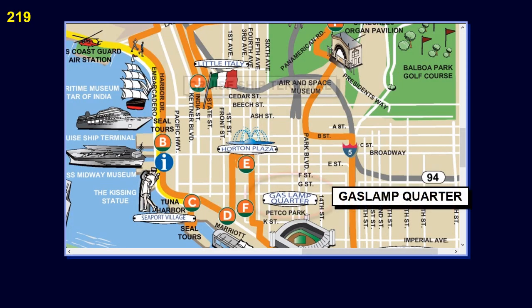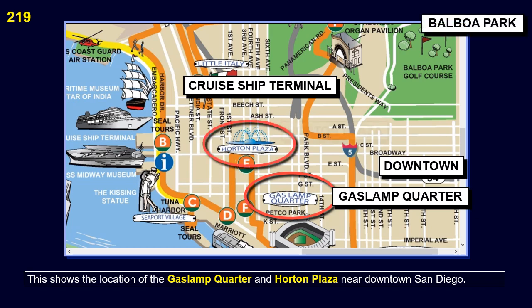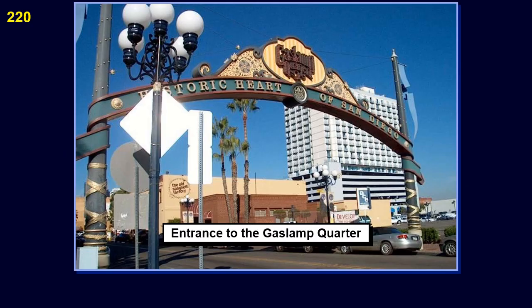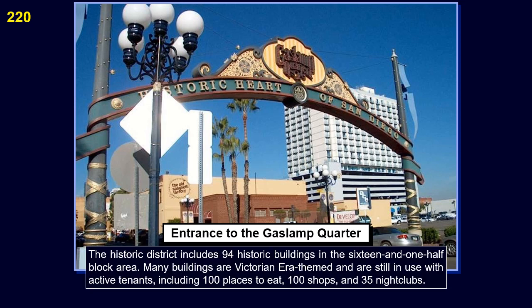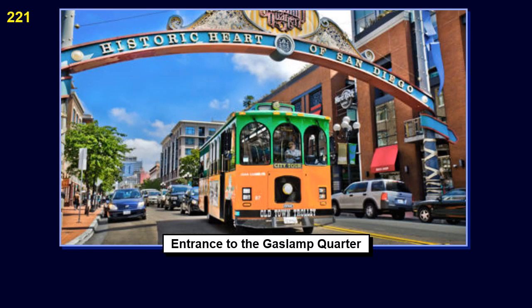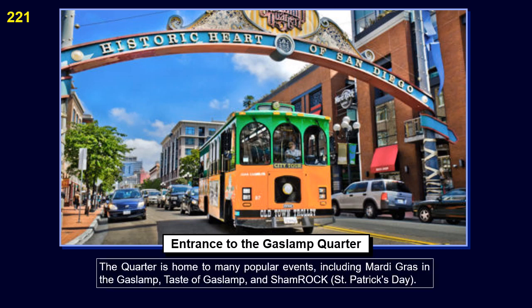This shows the location of the Gaslamp Quarter and Horton Plaza near downtown San Diego. The historic district includes 94 historic buildings in the 16.5-block area. Many buildings are Victorian-era themed and are still in use with active tenants, including 100 places to eat, 100 shops, and 35 nightclubs. The quarter is home to many popular events, including Mardi Gras in the Gaslamp, Taste of Gaslamp, and Shamrock, St. Patrick's Day.